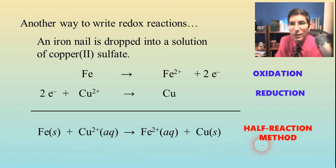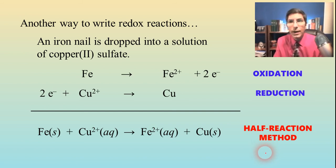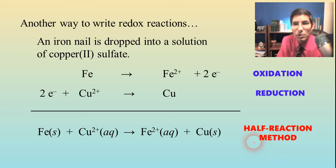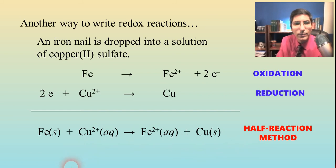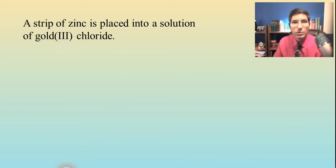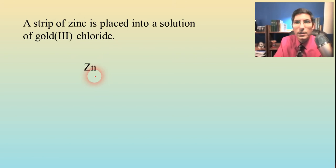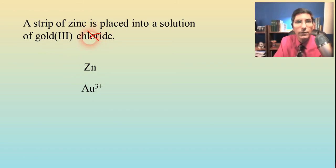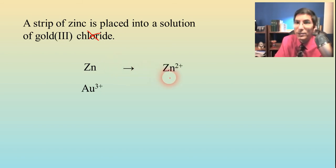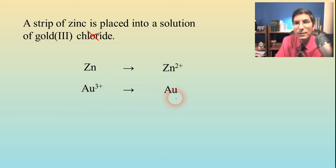This is called the half-reaction method for writing redox, and it's very useful for when we talk about electrochemistry. Let's try another one. A strip of zinc is placed into a solution of gold(III) chloride. Zinc is Zn and it's going to react with the gold(III) ion, Au³⁺. Chloride is the spectator, so we ignore that. Zinc turns into its Zn²⁺ ion form, and gold ions turn into gold atoms.